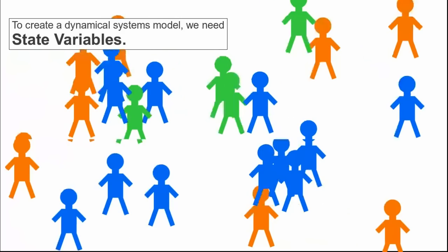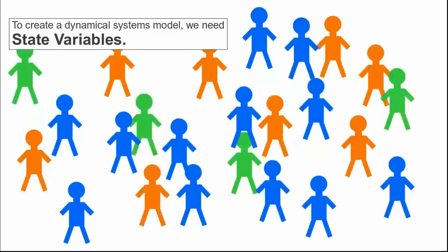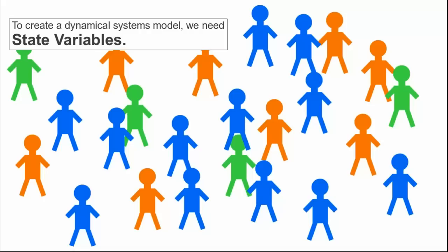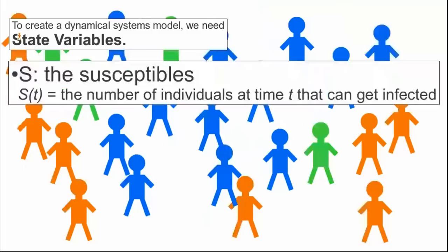We imagine that in the population we are modeling, everyone is running around everywhere, and no one stays in the same location for long. In this simplistic setting, everyone is equally likely to come in contact with any infected person, and we don't have to keep track of location. Just imagine that all these folks are constantly mixing around. In this simple case, we have only three different state variables.